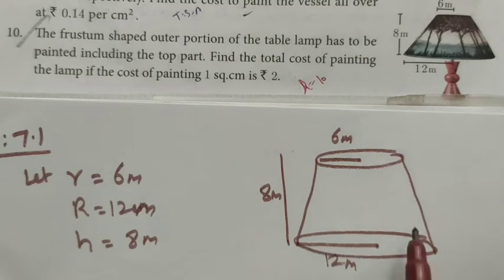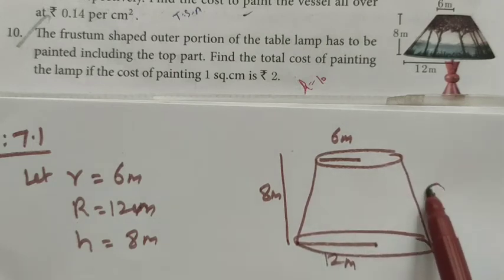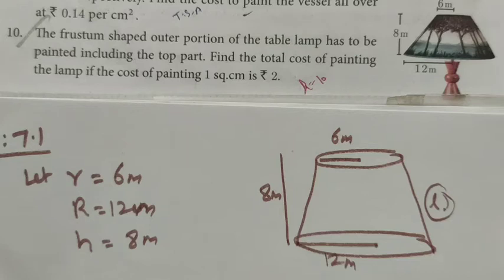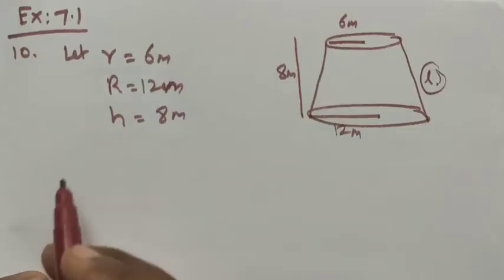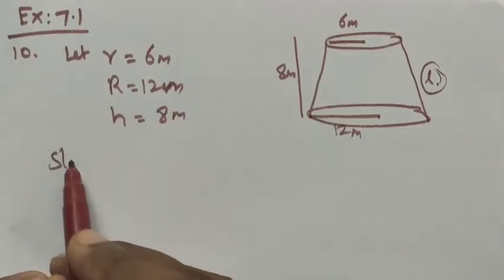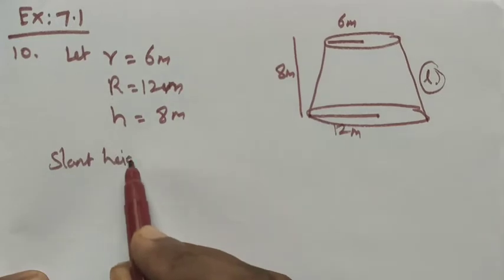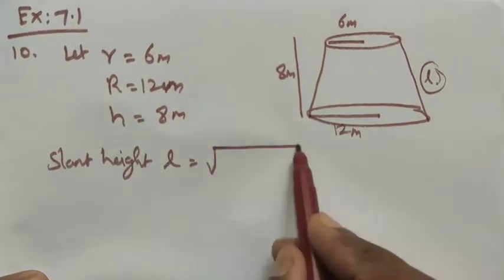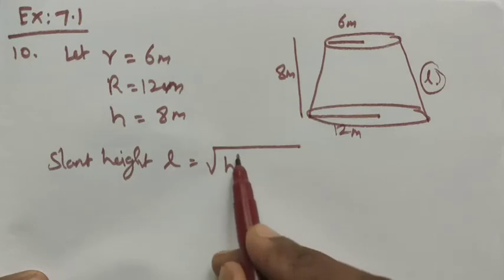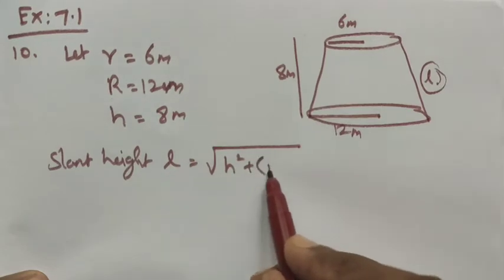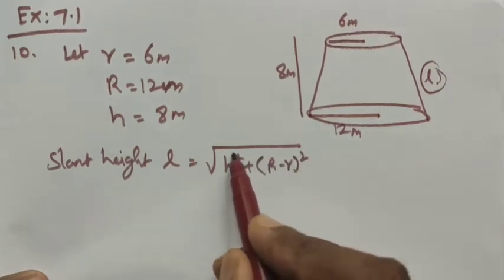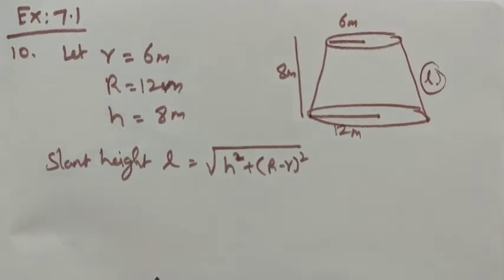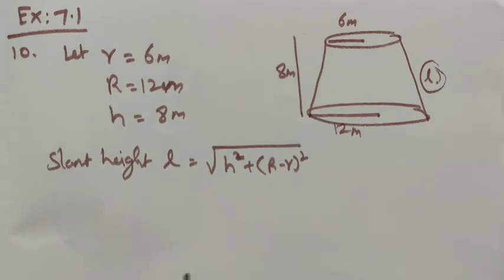To apply the formulas, we first need to find the slant height l. The slant height formula is: l = √(h² + (R − r)²).